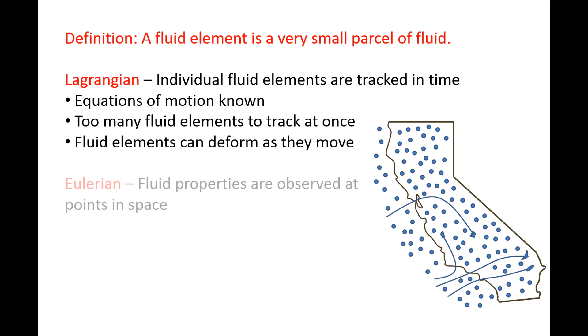The second viewpoint is called Eulerian, in which the fluid elements are observed at fixed points in space. For example, we could build multiple observation stations in California and record the properties of the fluid elements as they travel past the stations.